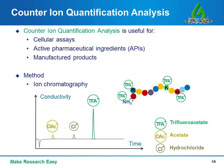Ion chromatography is the main method to identify and quantify different types of counter ions. The figure here illustrates an ion chromatogram where three different types of counter ions are well separated by an ion exchange column, shown as three main peaks. The peak areas are used for quantification by comparison to standard ion solutions.